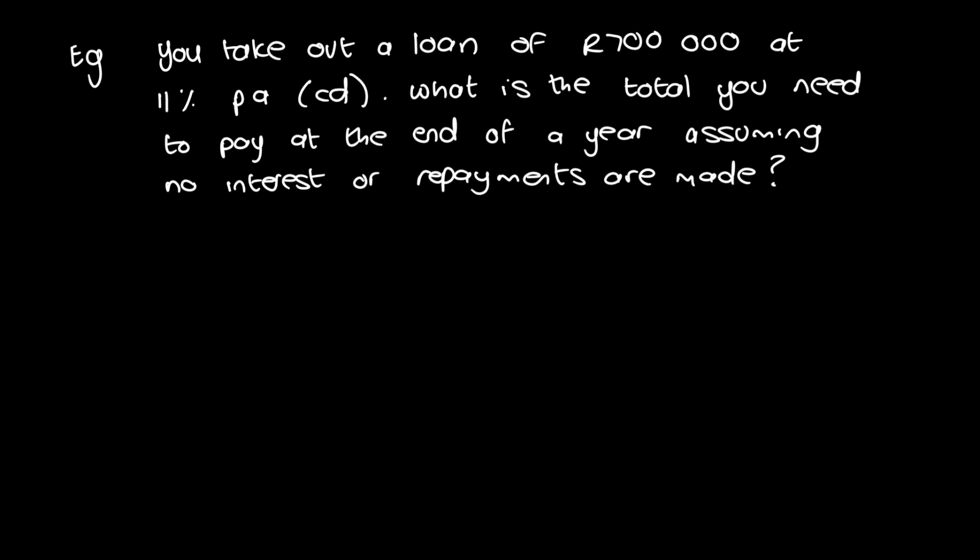Okay, so in this example, you take out a loan of 700,000 at 11% per annum compounded daily. What is the total you need to pay at the end of the year, assuming no interest or repayments are made? So no interest payments. I know it's written a bit dodgy, but it means no interest payments are made. Now you will see that this is very similar to the question we just did. The only difference is that it's now 11% per annum compounded daily. The other one was 15% per annum compounded monthly. So that's going to be the main change when we're working out the answer.